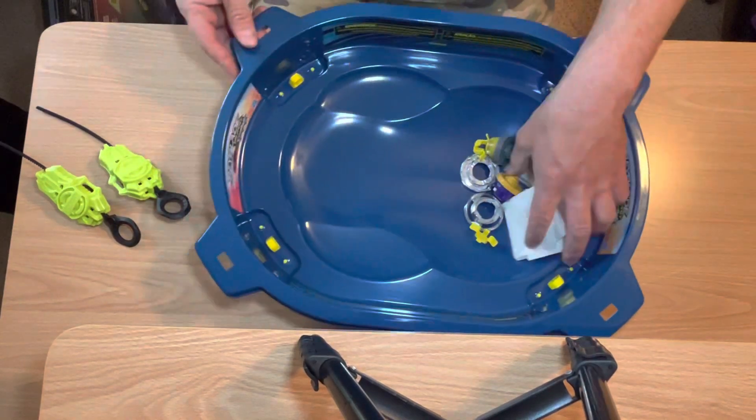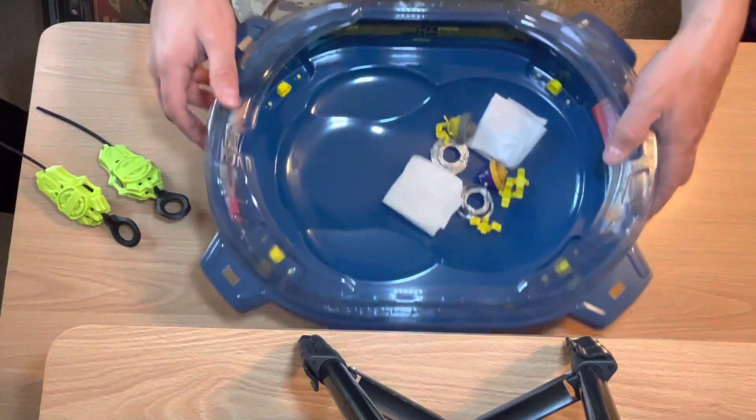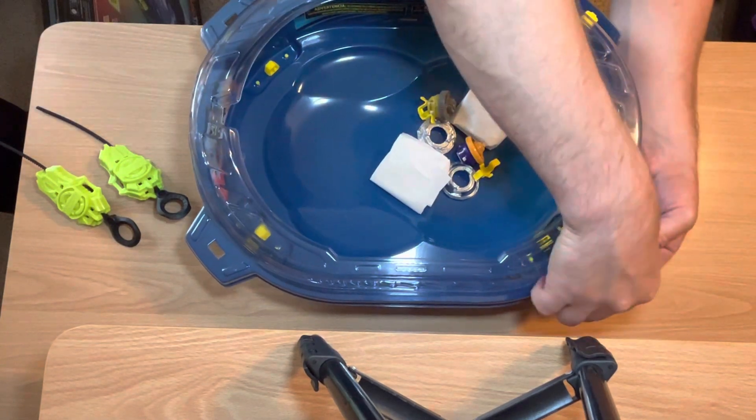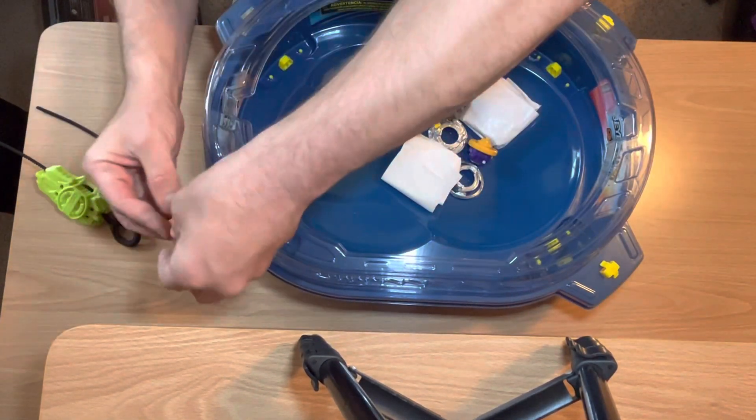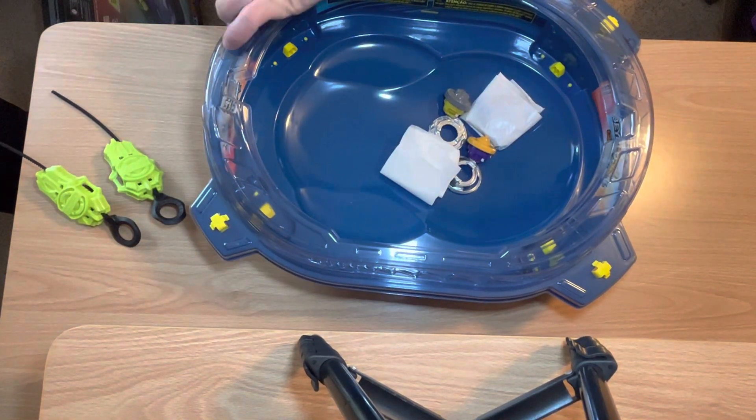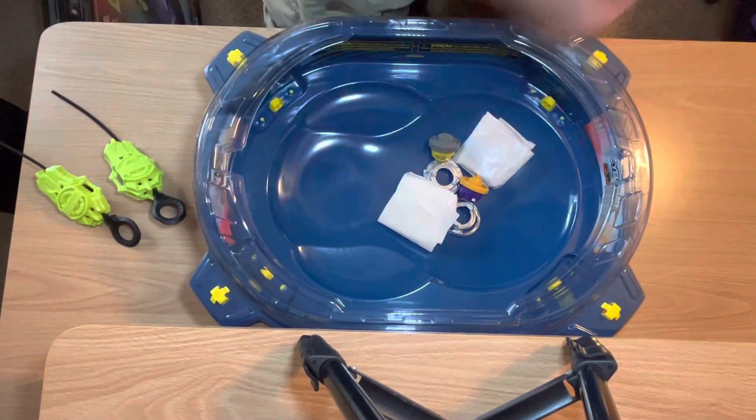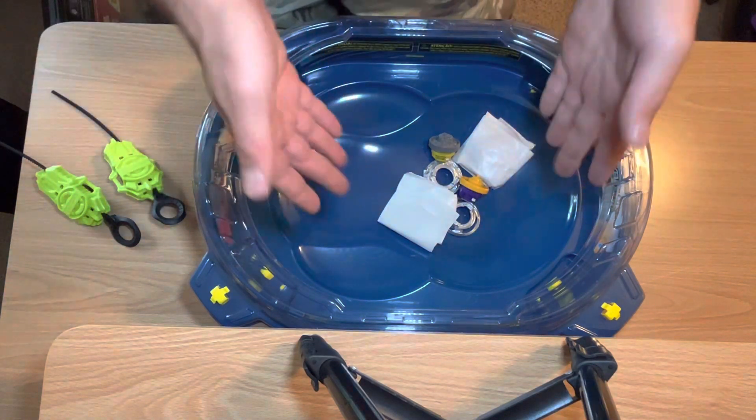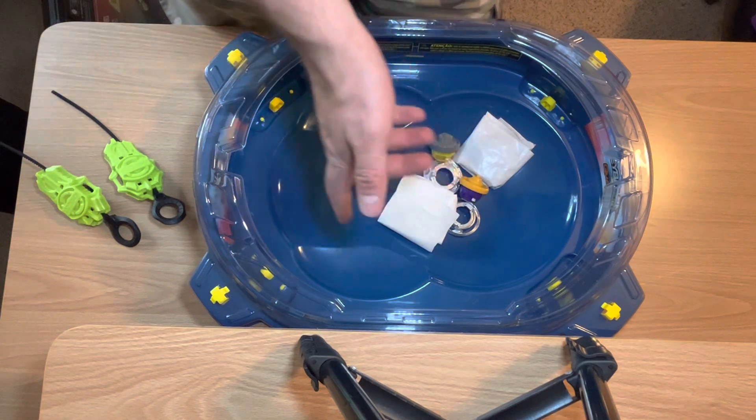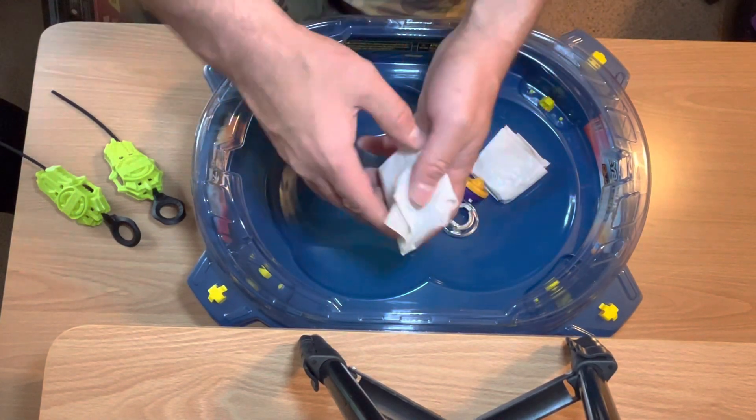All right. So we have the bottom of the stadium put together. Let's go ahead and put the top in the lid. And with that, we have the stadium put together. Looks very nice. I like it. In the camera, it looks like a midnight blue. It's actually not a midnight blue. It's more or less like a turquoise blue. So it's pretty cool. Definitely a cool color scheme that they went with.